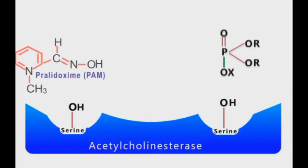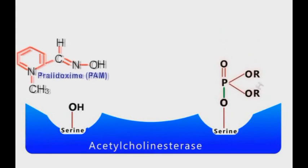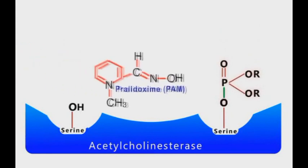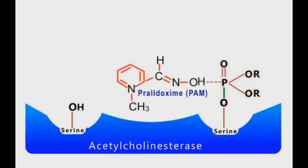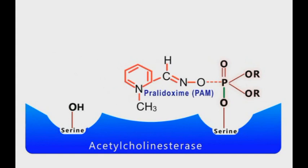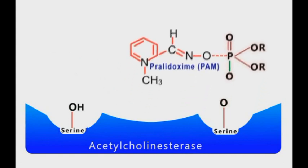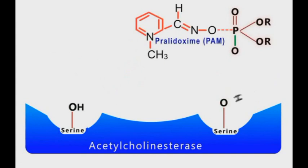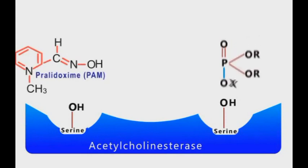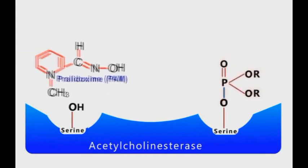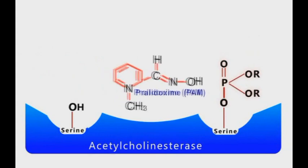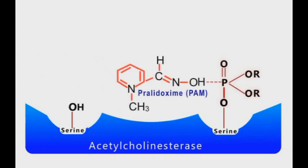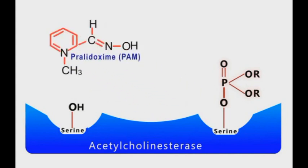As long as the binding of organophosphates to acetylcholinesterase is in the reversible state, pralidoxime molecules can be used to bind and scavenge organophosphates from acetylcholinesterase. Therefore, pralidoxime can save acetylcholinesterase from the destructive effects of organophosphates. However, if aging has already happened and the binding became irreversible, pralidoxime cannot bind to organophosphates and becomes useless in the detoxification process.